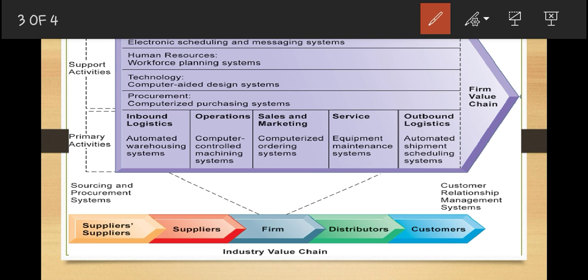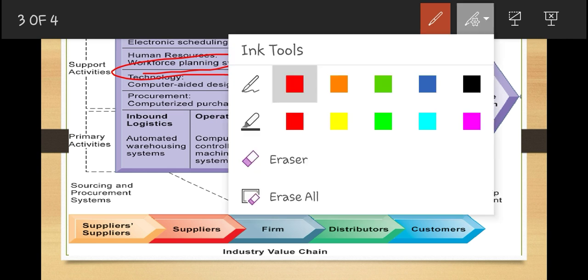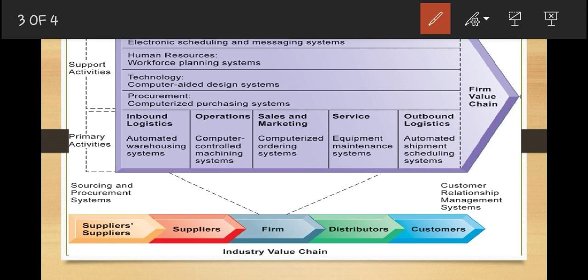Support activities consist of organizational infrastructure, which includes administration and management. There are also human resources, where you will find employee recruitment, hiring, firing, and training — information systems like workforce planning systems can be used here. Technology is also a support activity, covering improving products and the production process. In technology, you will find systems like computer-aided design systems, workflow systems, and collaborative systems.